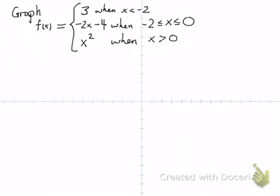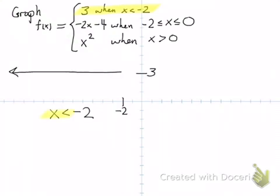Just go one piece at a time. Let's look at the first piece, and let's determine that restriction x less than negative 2. That's the portion of the x axis to the left side of negative 2. Now we need to graph that function 3. That's just y equals 3, which is a horizontal line up at 3. But we only want it when x is less than negative 2, so we're only going to draw it to the left of negative 2.